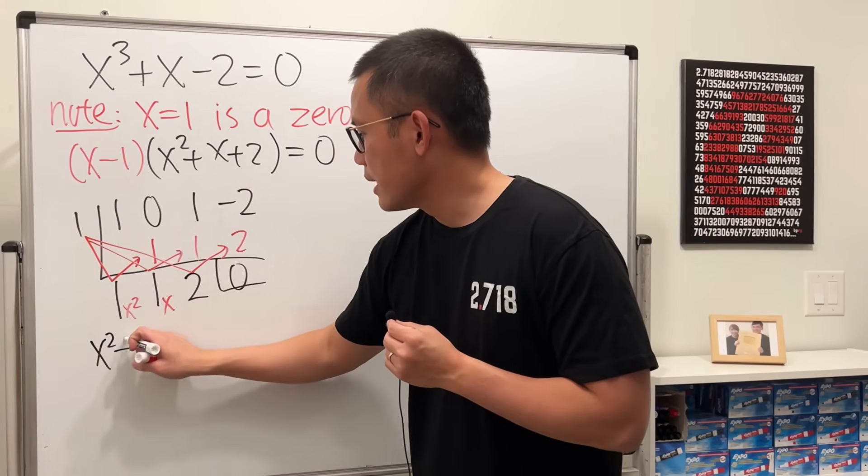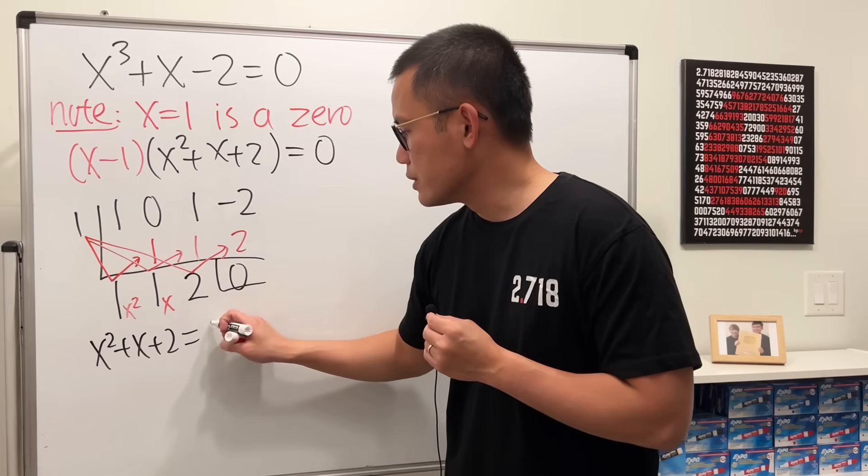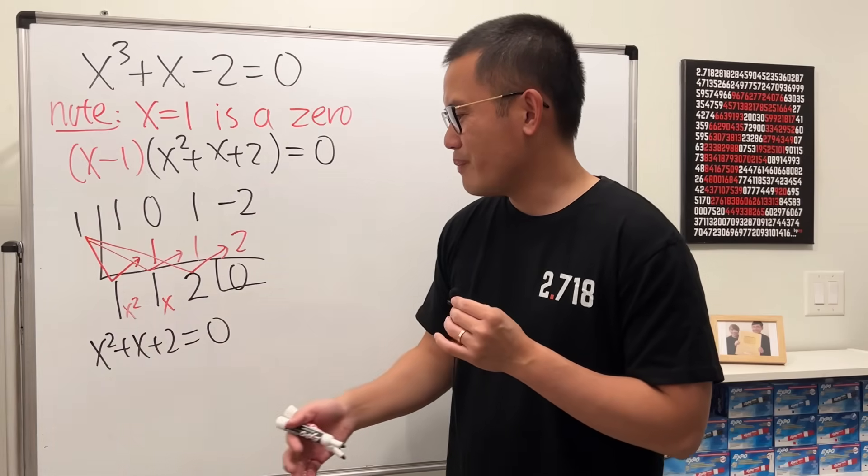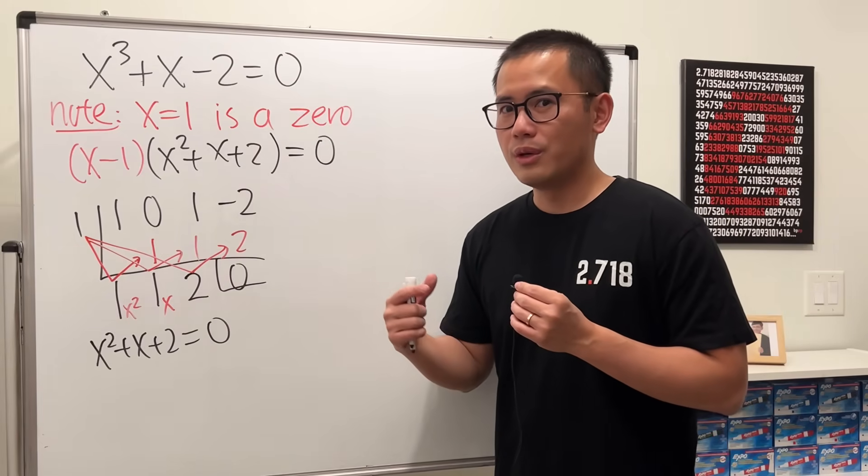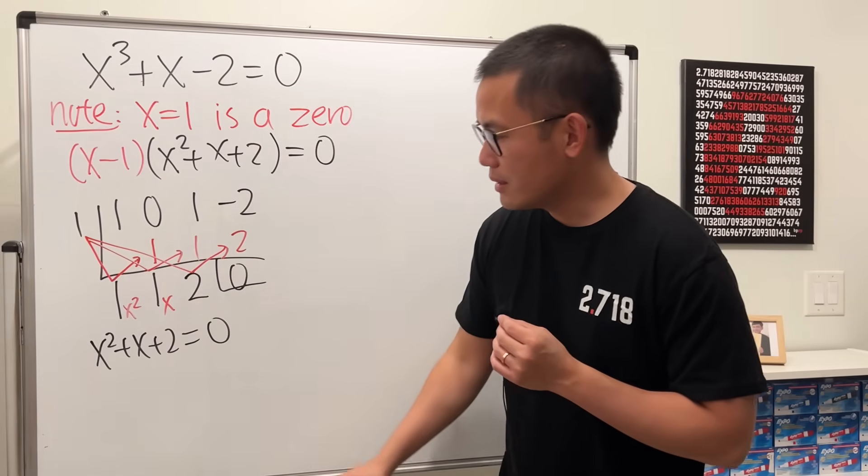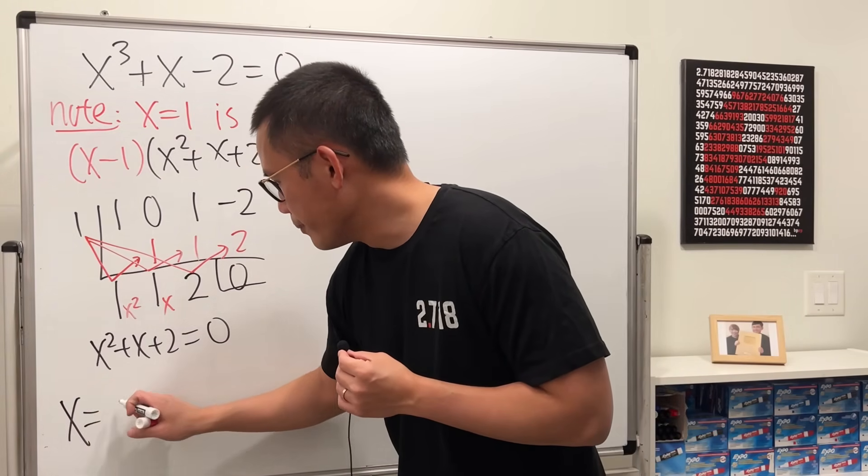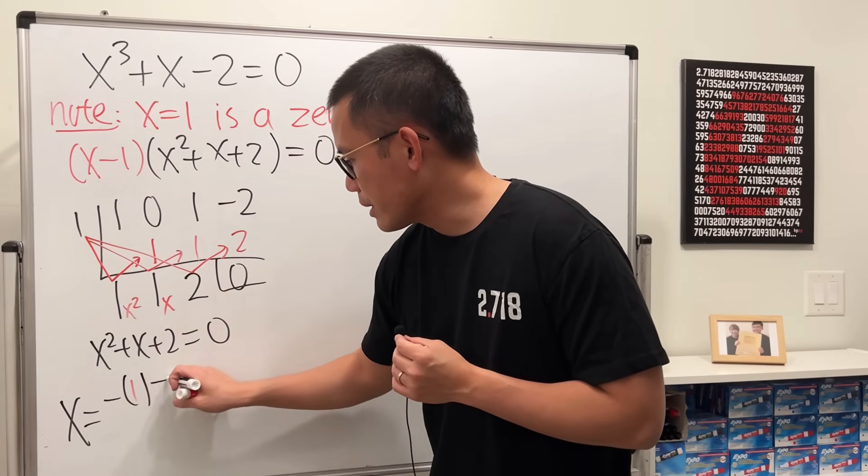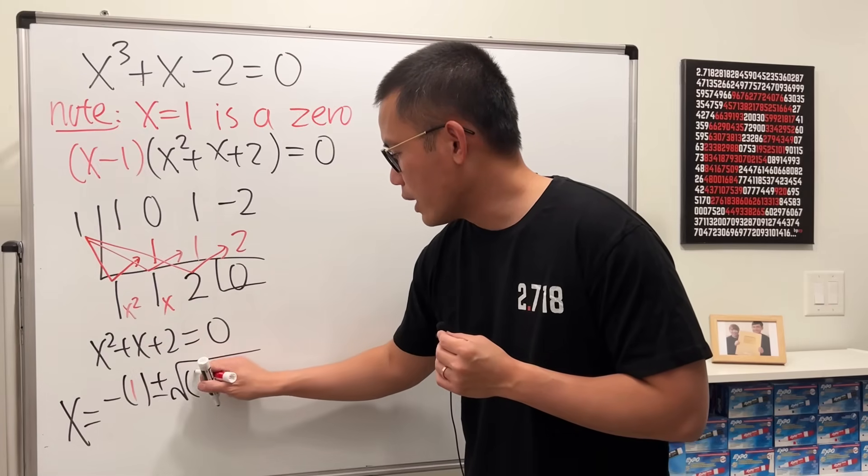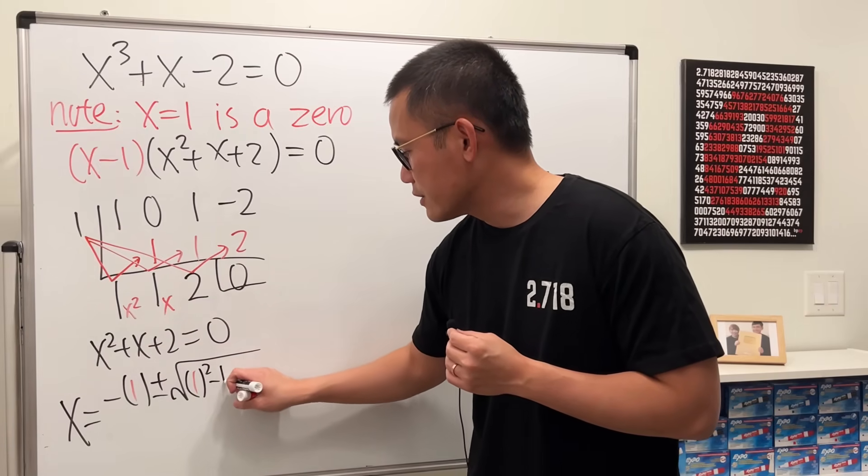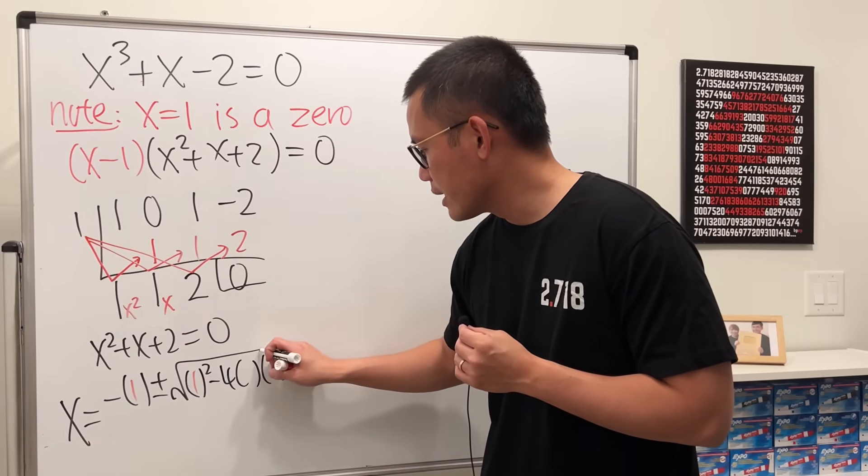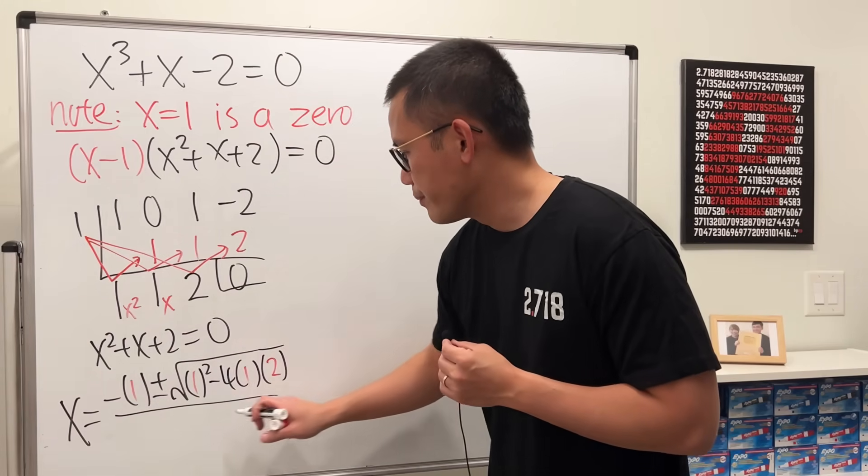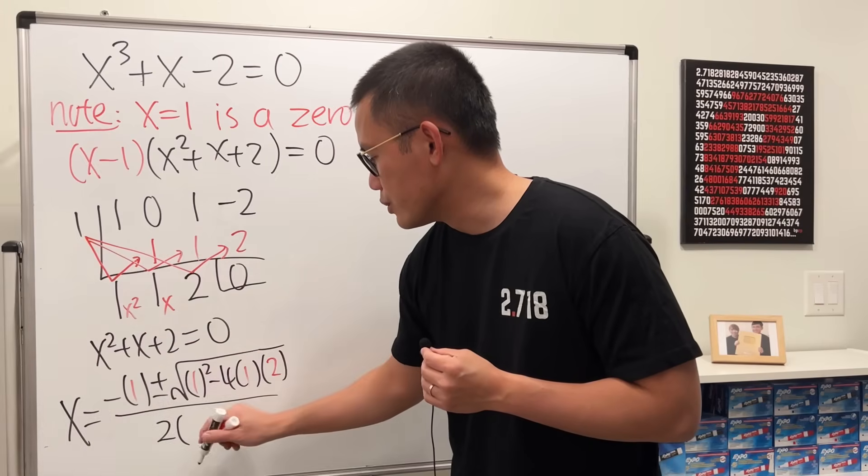And because the coefficient here is 1, it's not an even number, so I will just solve this by quadratic formula. So x is equal to negative 1, the b value, and then plus or minus square root of the b value is 1, and then square that, minus 4ac. a is 1 and c is 2, and then over 2 times the a value which is 1.